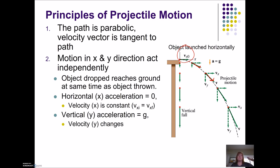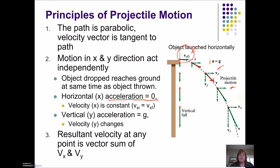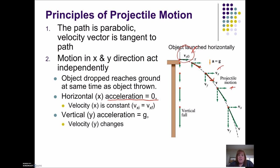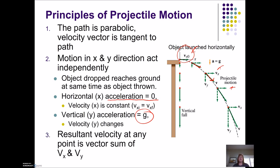In the absence of air resistance, our horizontal velocity is never going to change because there's going to be zero acceleration in the x direction. So my initial velocity in the x direction is going to stay constant. My final velocity in the x direction is the same as my initial velocity. But in the vertical direction, because I'm under the influence of the acceleration due to gravity, my velocity in the y is going to change. For an object launched horizontally, it's going to increase as it falls. The resultant velocity — that velocity tangent to the path — is the vector sum of the constant x velocity and the increasing y velocity.